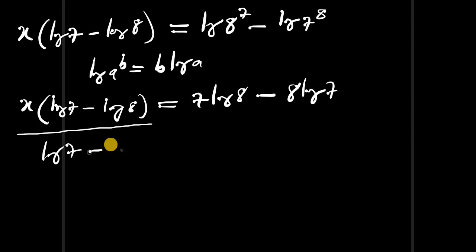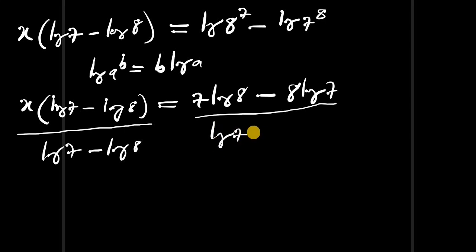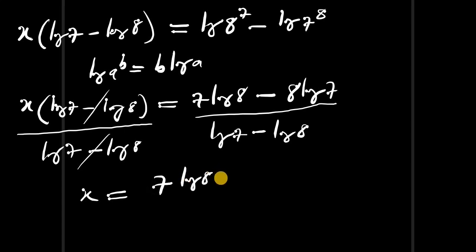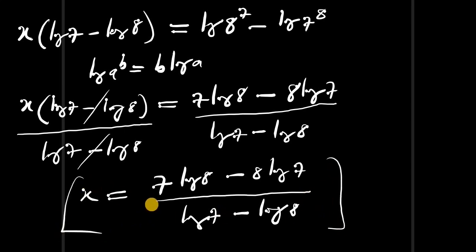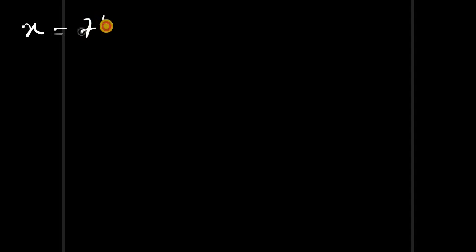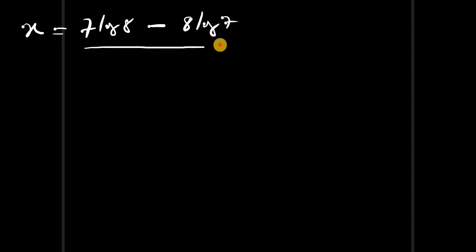Expanding, we have x equals 7 times log of 8 minus 8 times log of 7, divided by log of 7 minus log of 8. Let's continue from here on the next slide: x equals 7 log 8 minus 8 log 7, divided by log 7 minus log 8.